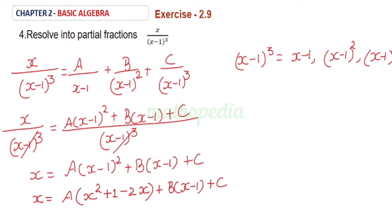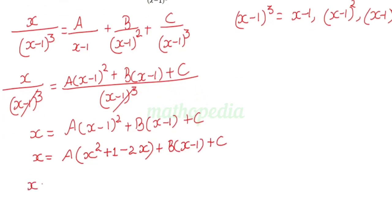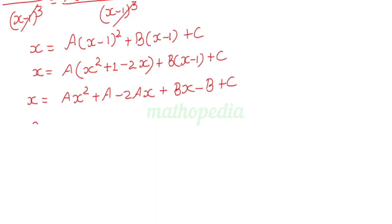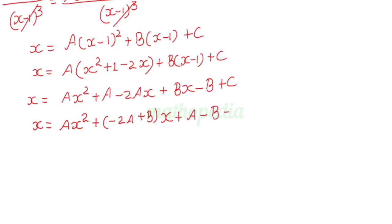So x equals, multiplying out A: Ax squared minus 2Ax plus A plus Bx minus B plus C. Now grouping like terms: x equals Ax squared plus (minus 2A plus B)x plus (A minus B plus C).